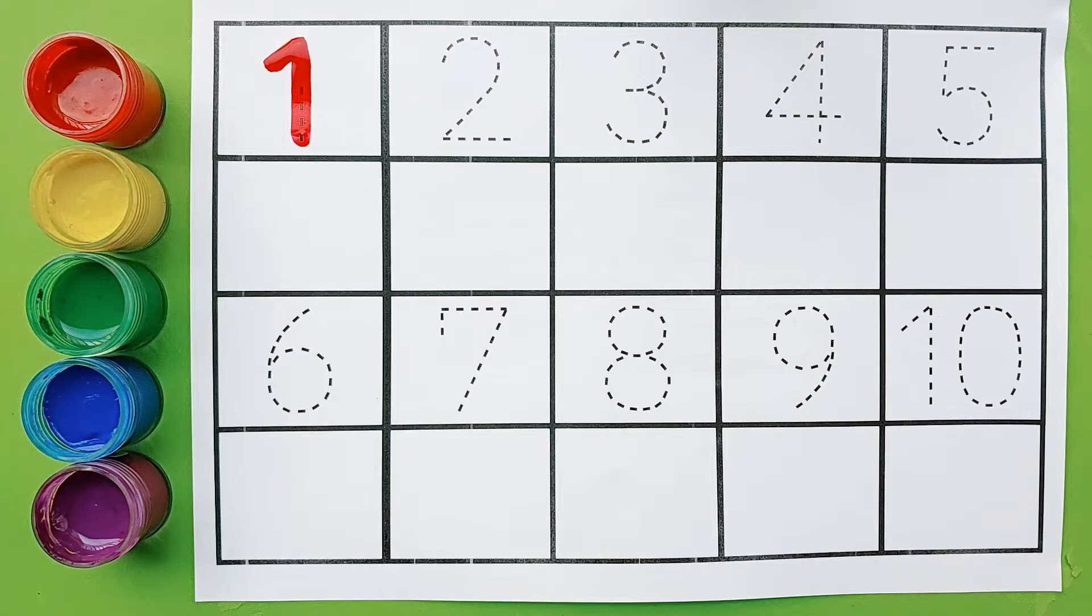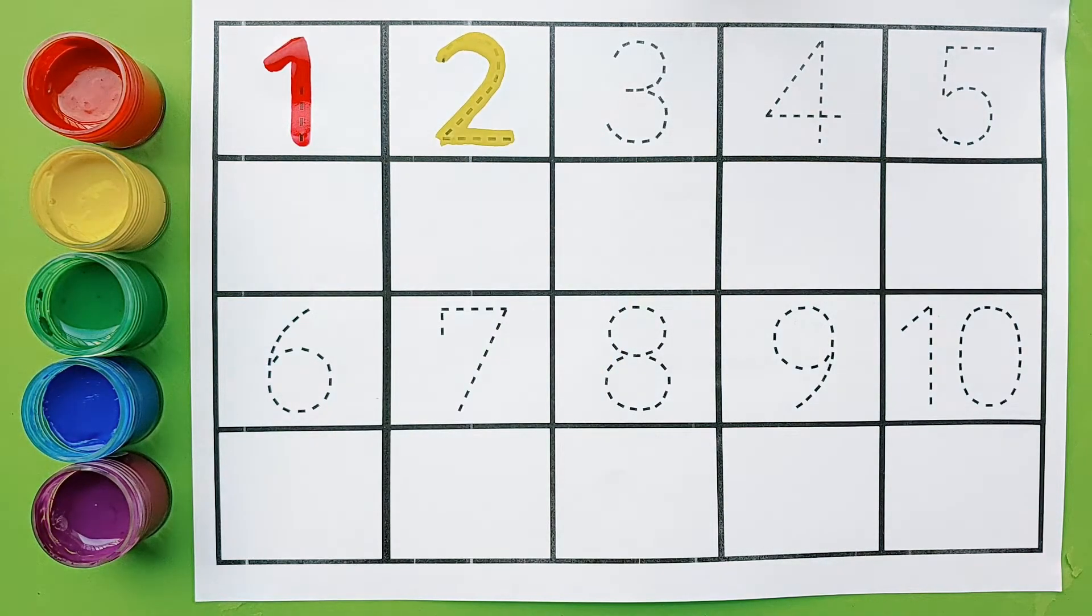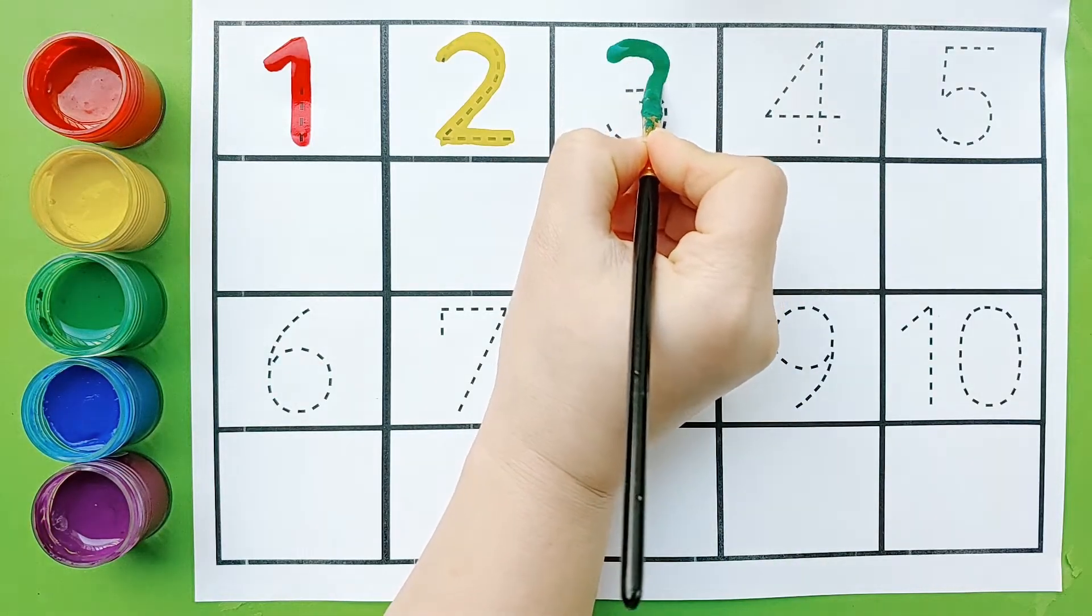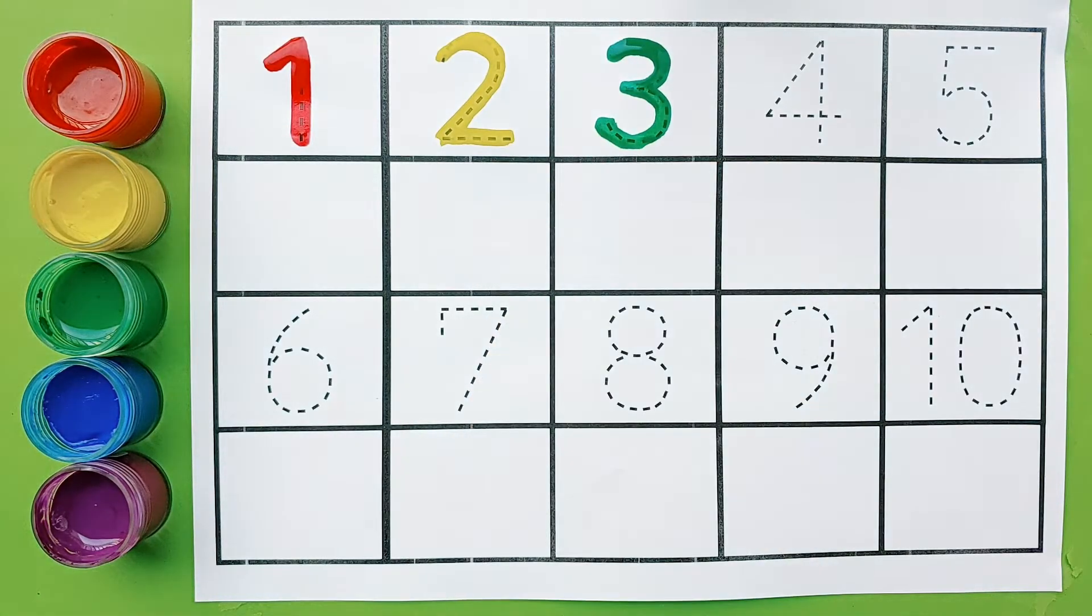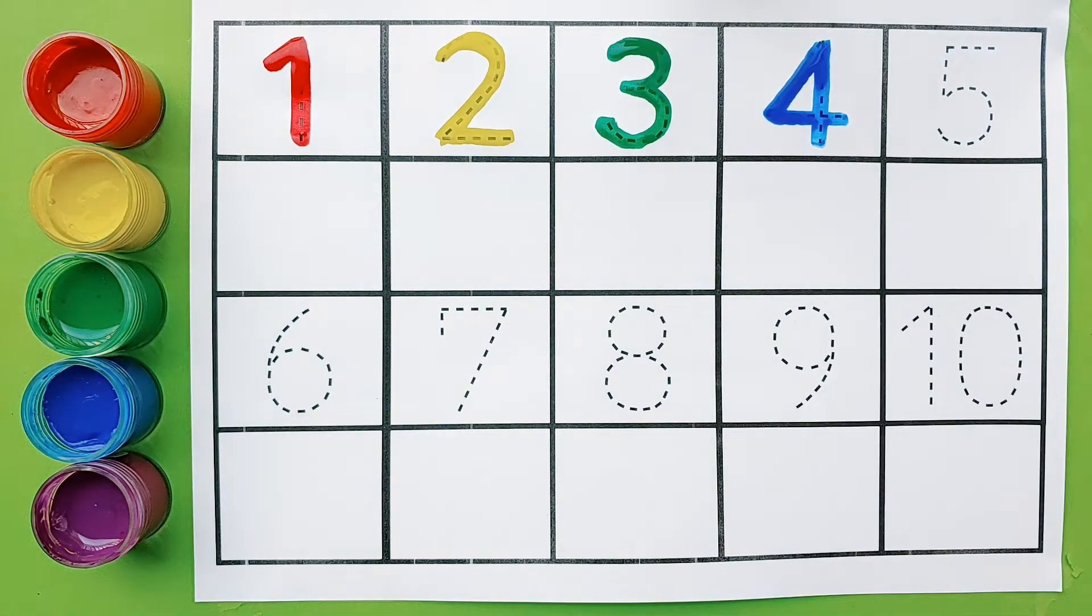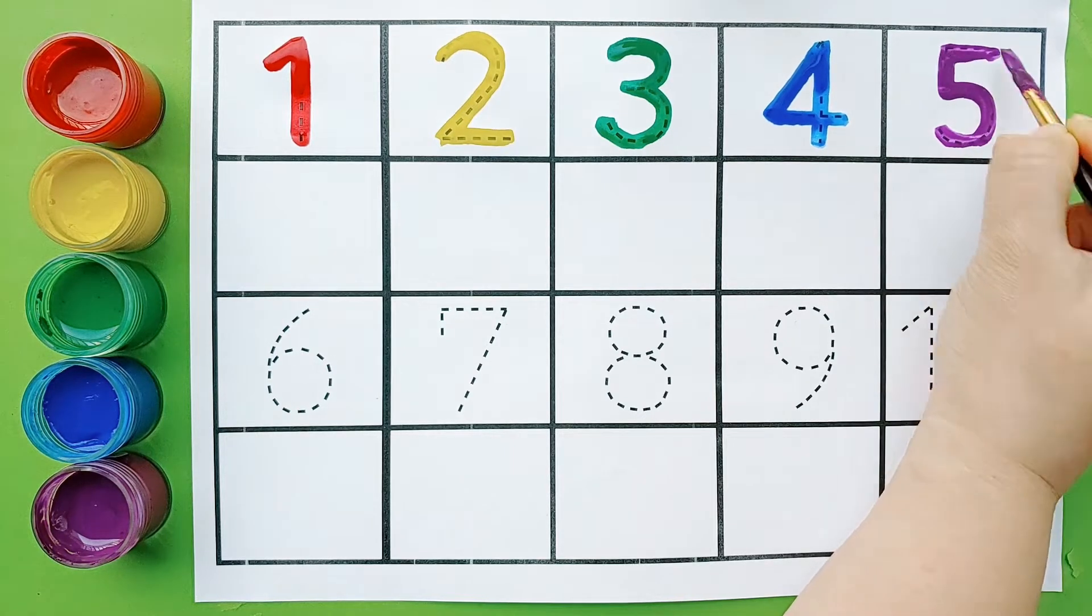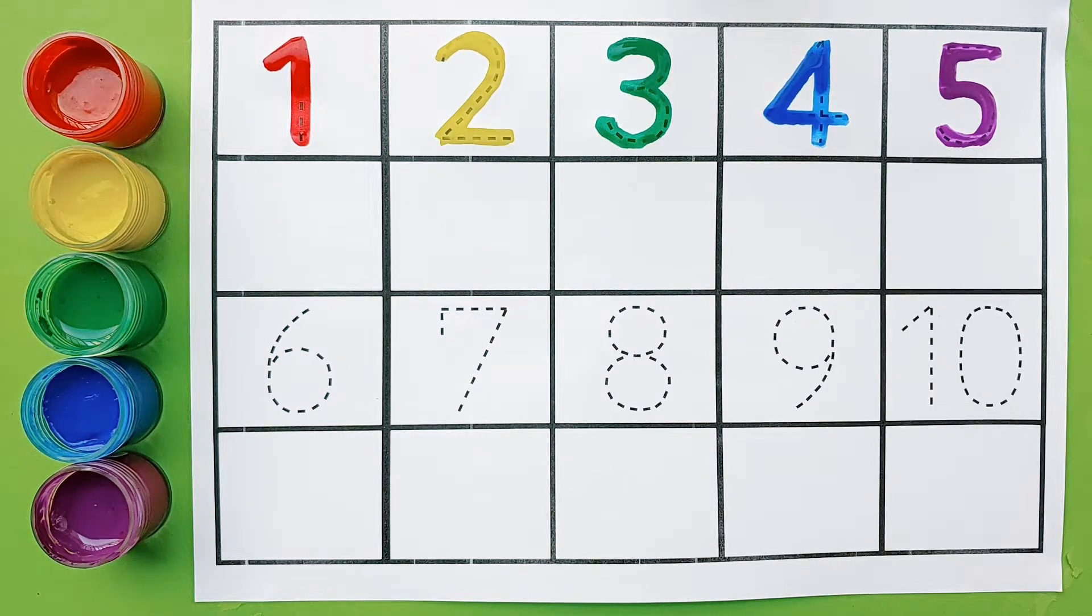One. A, B, C, D, E, F, G, H, I, J, K, L, M, N, O, P, Q, R, S, T, U, V, W, X, Y, and Z. Now I know my ABCs, next time won't you sing with me.